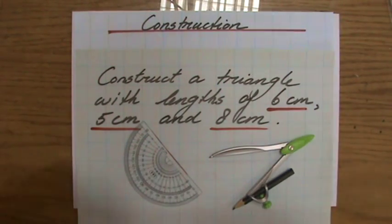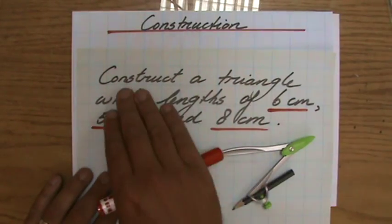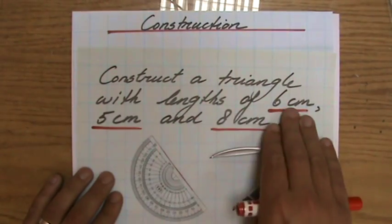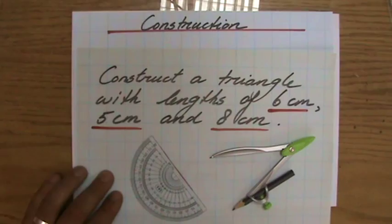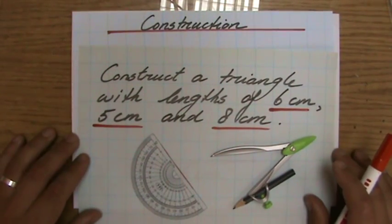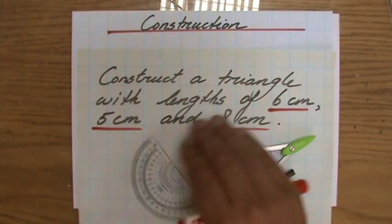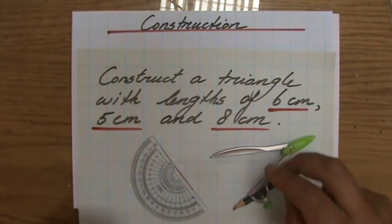In the previous video we've constructed a triangle when we're given one length and two angles, but now we're going to construct a triangle with lengths of 6 centimeters, 5 and 8 centimeters, so they don't give us any angle sizes. Not a problem. We're going to start by picking one of these lengths and I'll just start with the first one, 6 centimeters.